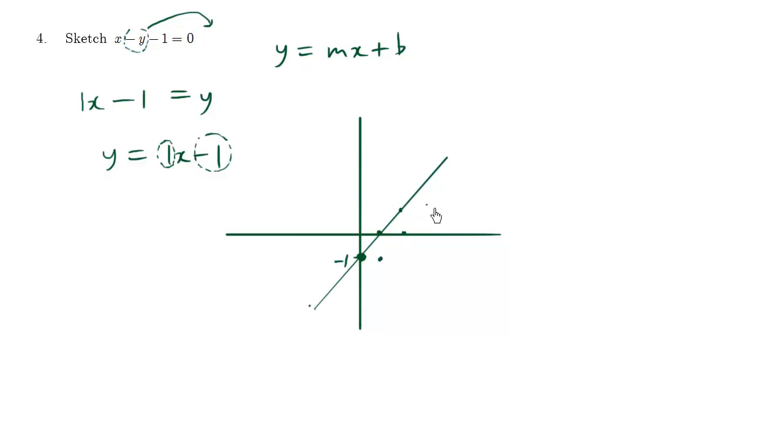And you can even come up with exact points because we know what this point is. This point happens to be zero comma negative one. So I can literally find this point by adding one this way, x-wise, and then adding one this way, y-wise. So this line, which is y equals x minus one, and also happens to be x minus y minus one equals zero.